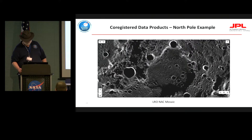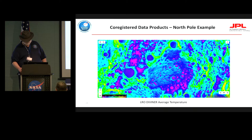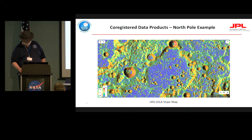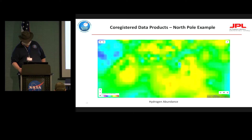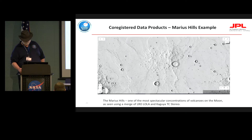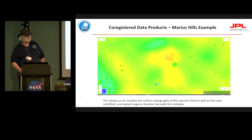Taking a look at the Lunar North Pole from NAC-based imagery with the deep shadows, piercing the shadows with laser altimetry, looking at average temperature from Diviner, maximum temperatures from Diviner, slope maps, adding in the permanently shadowed regions, and hydrogen abundance. Another example — taking a look at the Marius Hills, fairly unspectacular in WAC imagery, much better in laser altimetry, adding in a gravity map. The ability to stack and blend data products means you can get to data that is not available in any single data product.